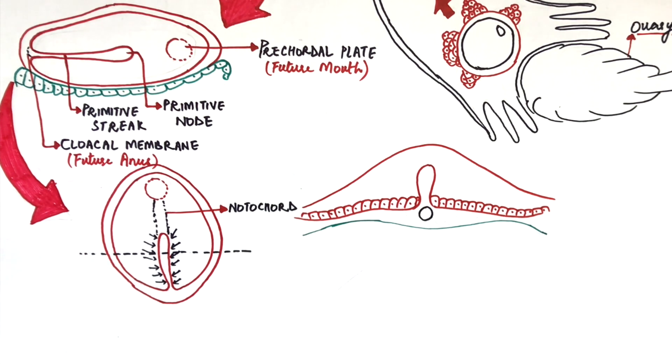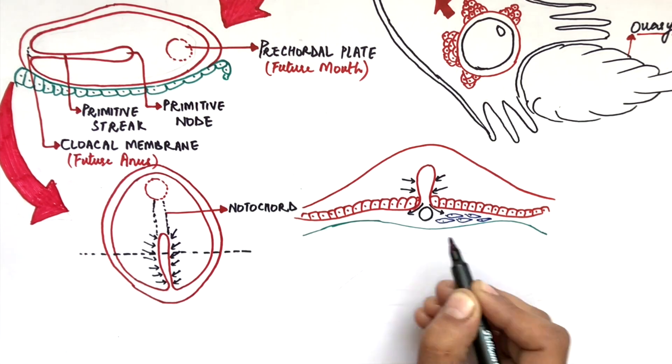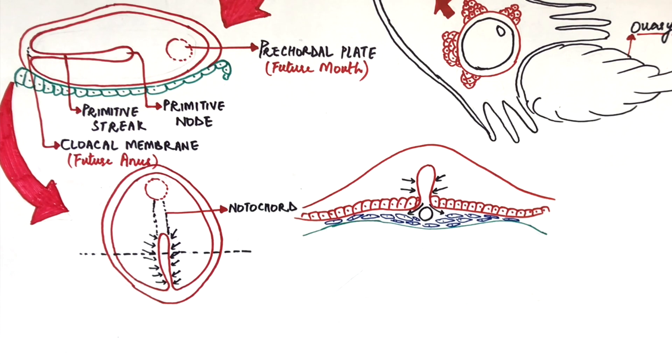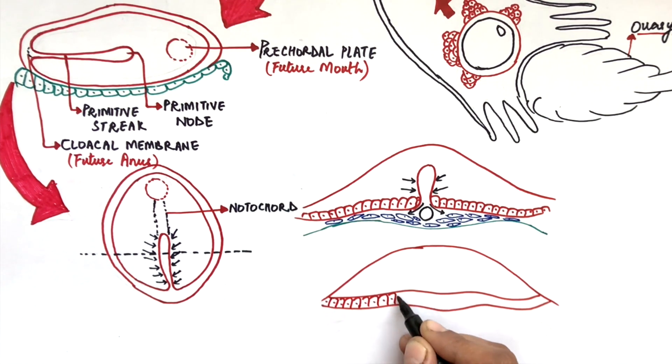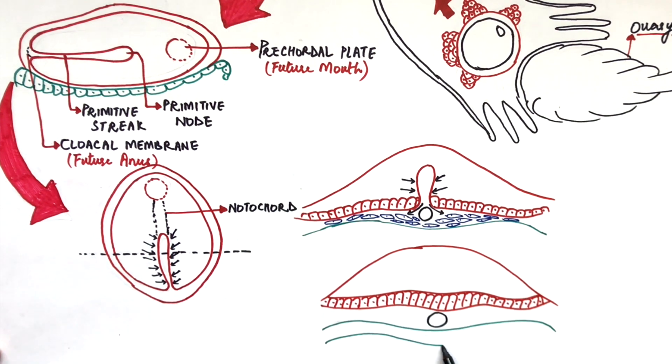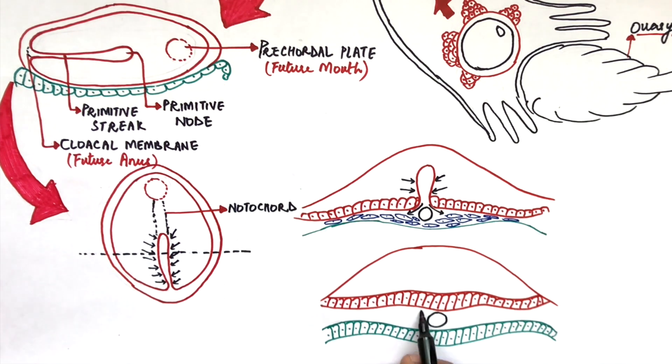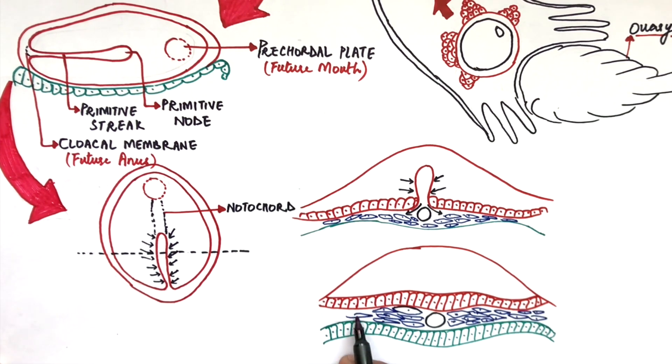The bilaminar disc which had two layers before is now converted into three layers of cells: a superficial layer of ectoderm, and immediately under this ectodermal layer lies the notochordal tube. The endodermal layer lies beneath the notochord, and the newly formed mesoderm derived from the epiblast lies lateral to the notochord.